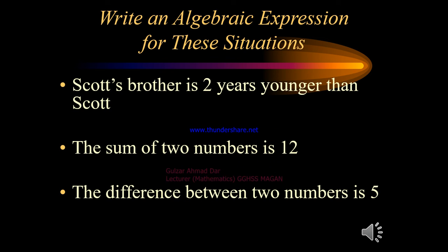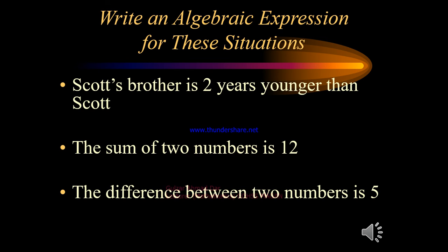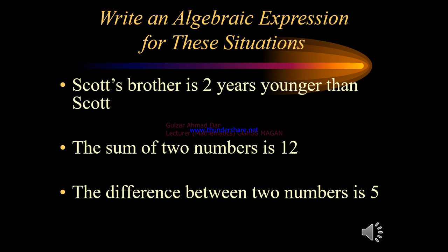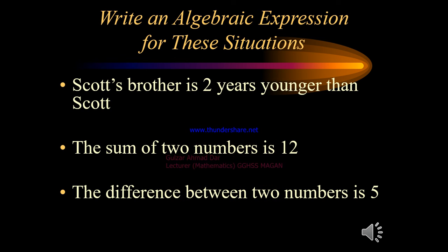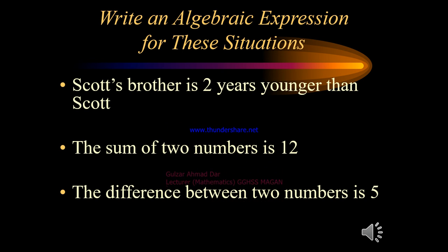Now let's express some situations as algebraic expressions. For example: 'Scott's brother is 2 years younger than Scott.' If we represent Scott's age by s, then since his brother is 2 years less, Scott's brother's age would be s minus 2.